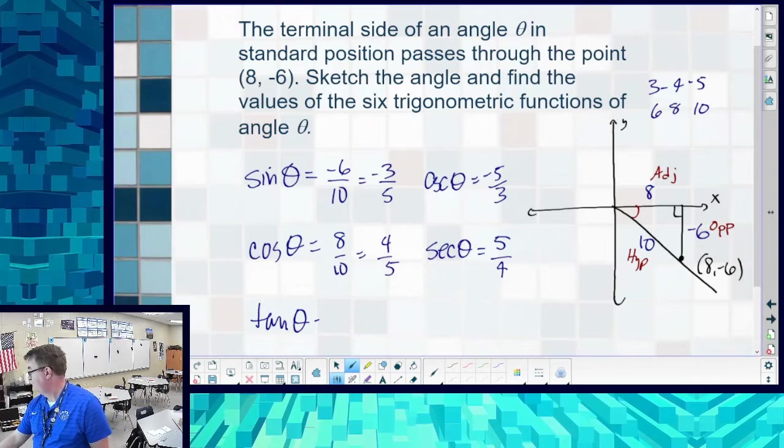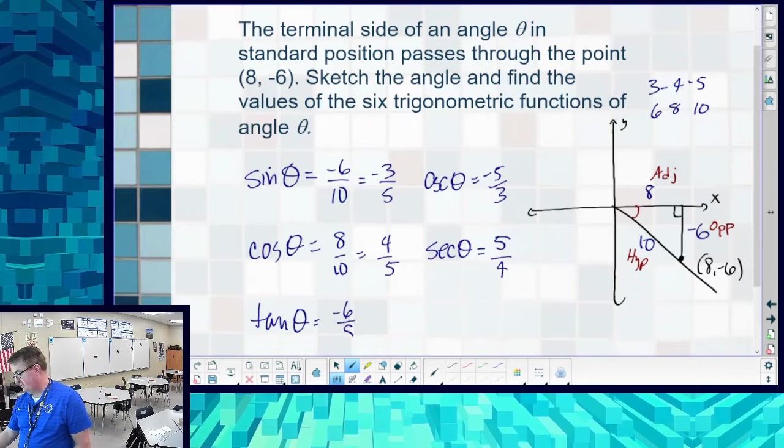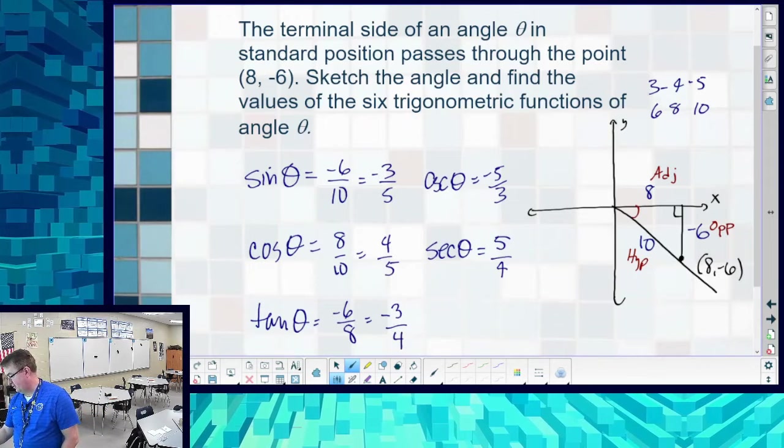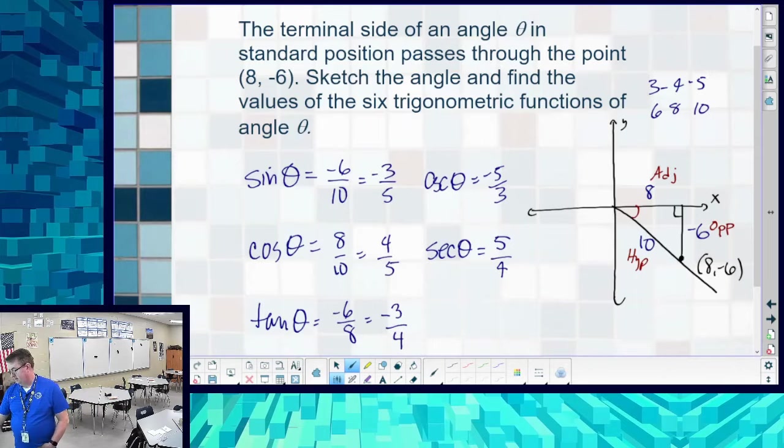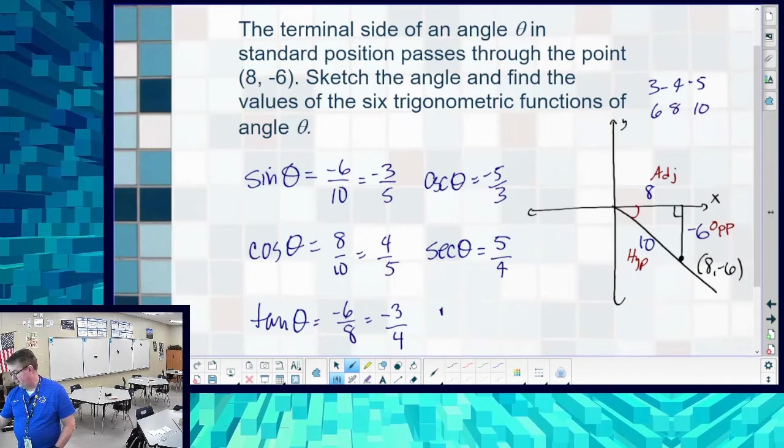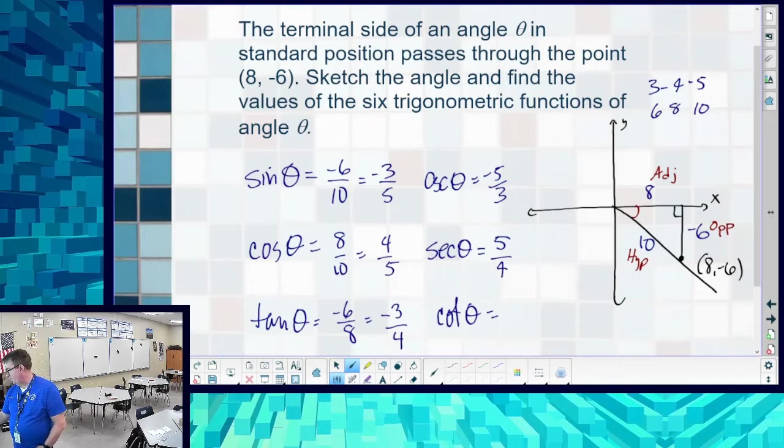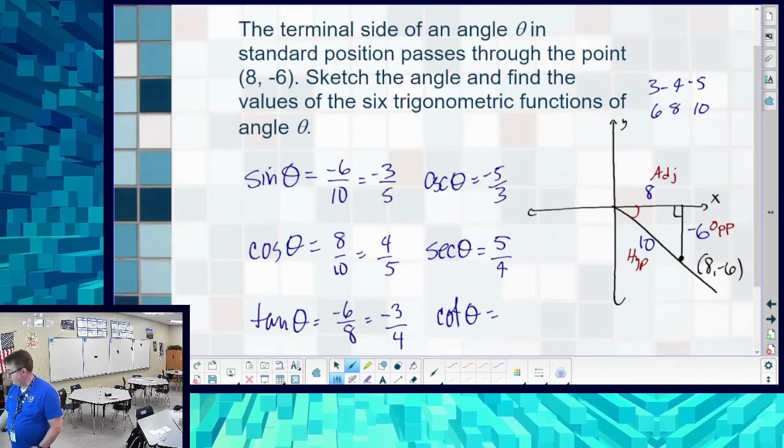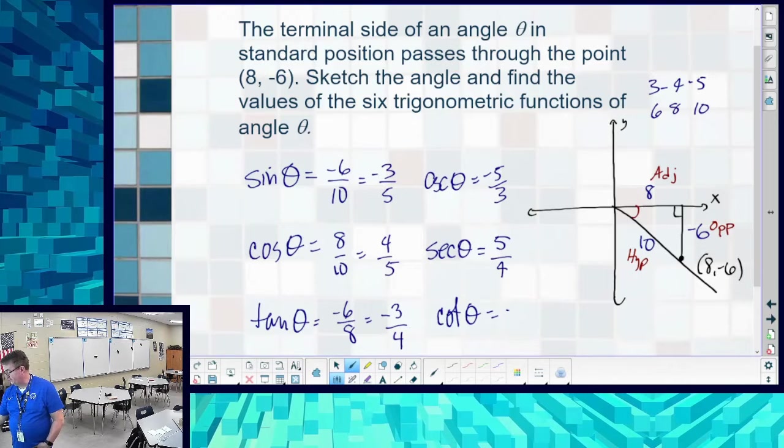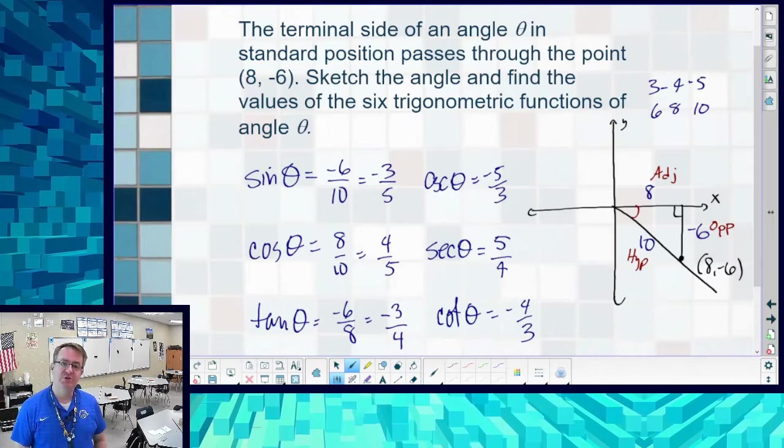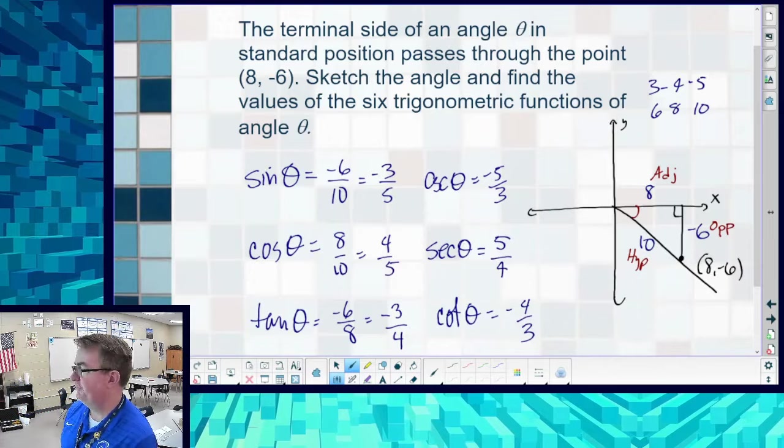And then my tangent, -6/8, that's going to be -3/4. Interesting thing here about tangent. The slope of this final side is always going to match up the sign of the tangent. So this is a negative slope, so we're going to get a negative tangent. And cotangent is -4/3. Totally amazing.